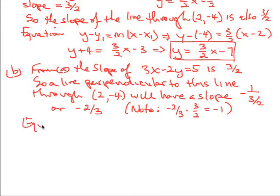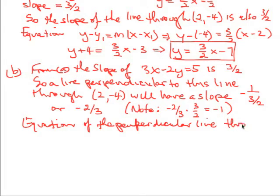So the equation of the perpendicular line through (2, -4) with slope negative 2/3 is, again we do the point slope form.